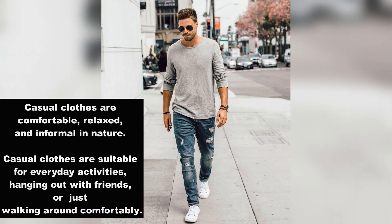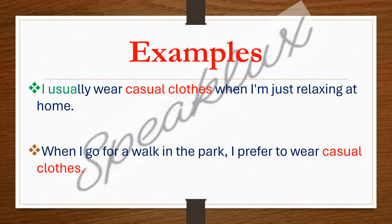Let's see some sentences to understand the usage of these words. I usually wear casual clothes when I'm just relaxing at home or when I go for a walk in the park. I prefer to wear casual clothes. So casual clothes are ones which are comfortable to you and informal in nature.